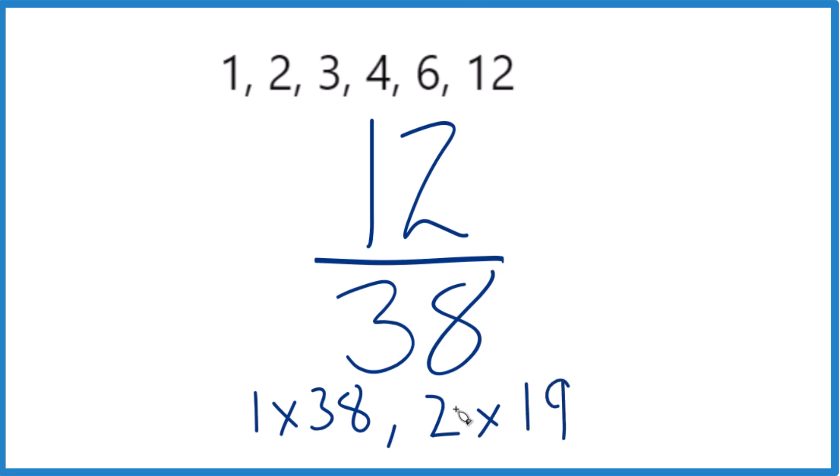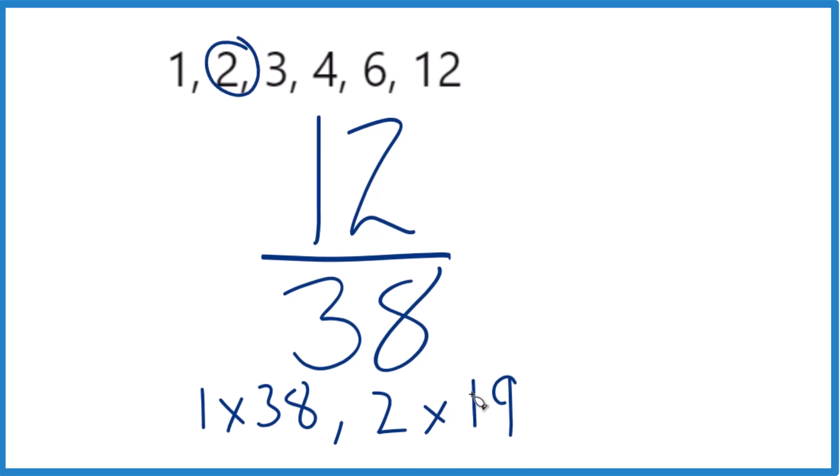So we're looking for the greatest common factor. So 19 is not up there, 2, we have 2, 38, so it looks like 2, that's the greatest common factor.